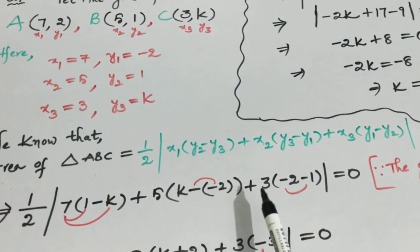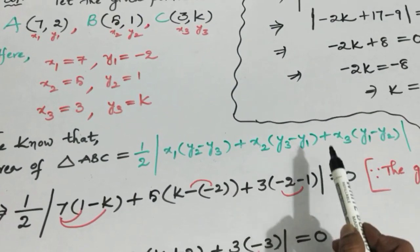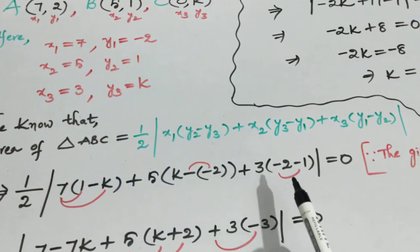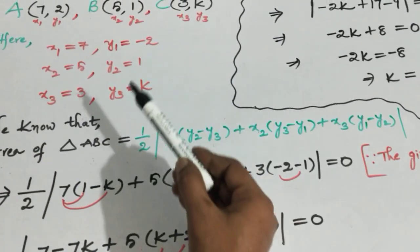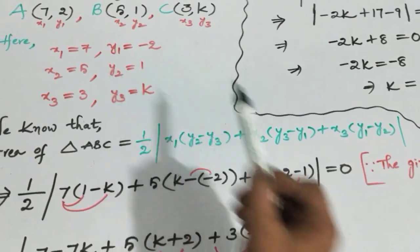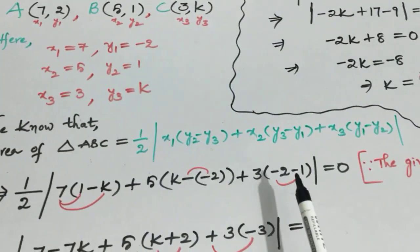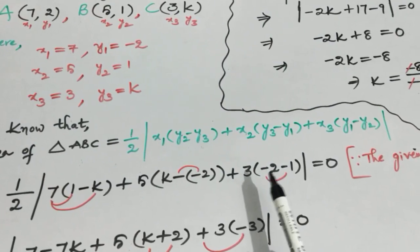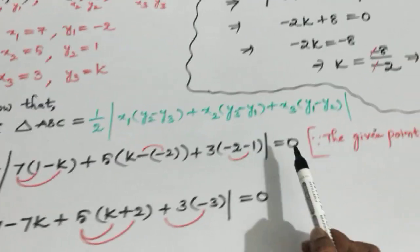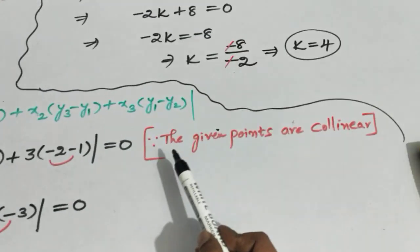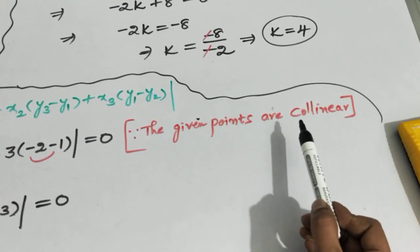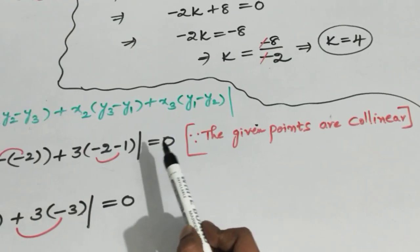Then plus x3, which is 3, times (y1 - y2), which is (-2 - 1). Close the bracket, and this is equal to zero, because the given points are collinear. When points are collinear, the area of the triangle is definitely equal to zero.